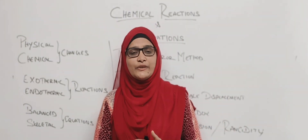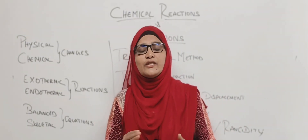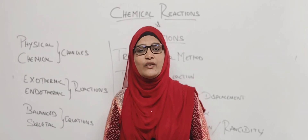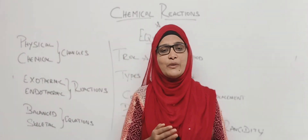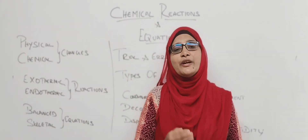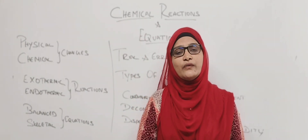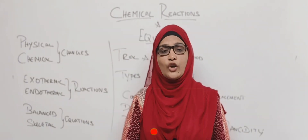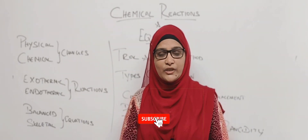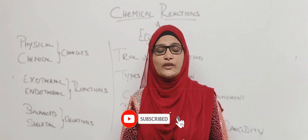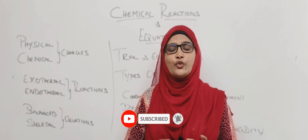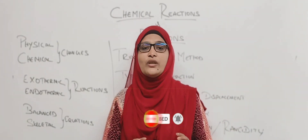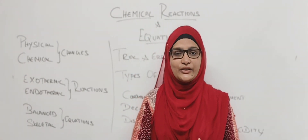Chemical changes are an irreversible reaction — once we react, we cannot get back. For example, magnesium plus oxygen combined together gives magnesium oxide. At the same time, when we heat carbon plus oxygen, we get carbon dioxide. In this case, we get a new product out of two reactants. It is called a chemical change or chemical reaction.